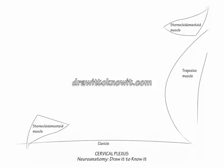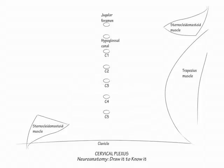In the midline of the page, draw seven small foramina: the jugular foramen, the hypoglossal canal, and the exit foramina of C1, C2, C3, C4, and C5. The cervical plexus is formed from the C1 to C4 spinal nerves. We include the jugular foramen, hypoglossal canal, and C5 because they comprise related anatomical structures, which we will draw here.